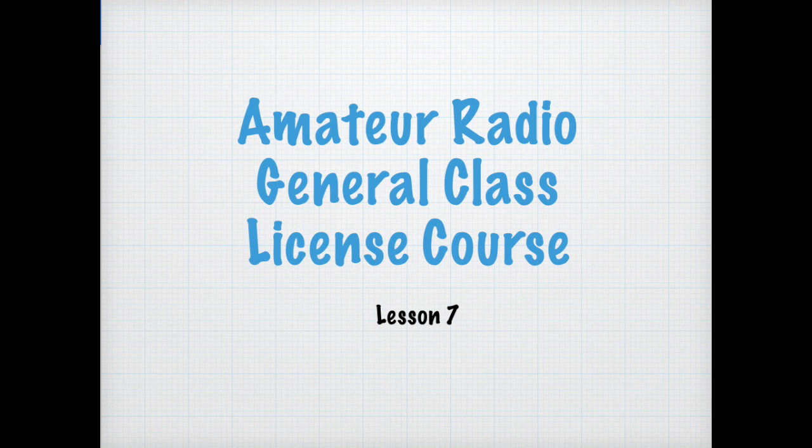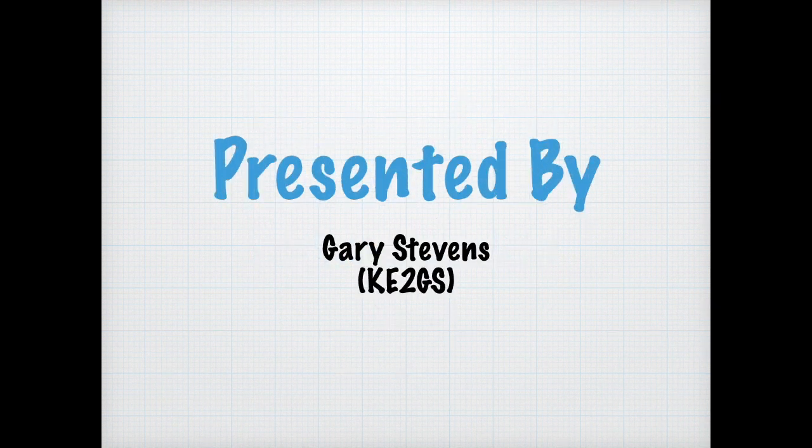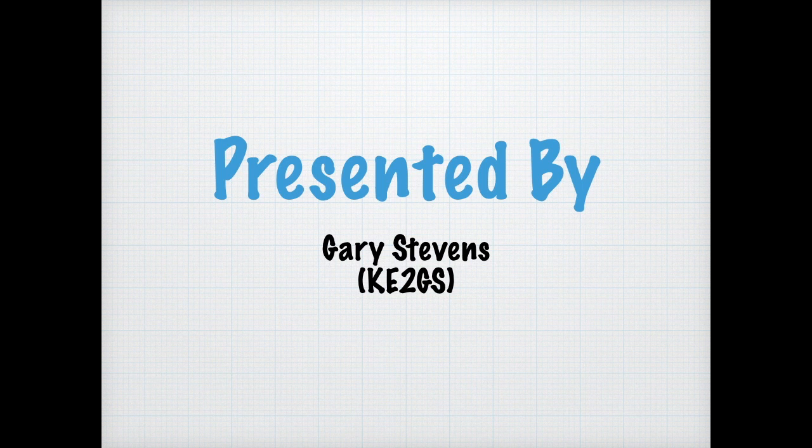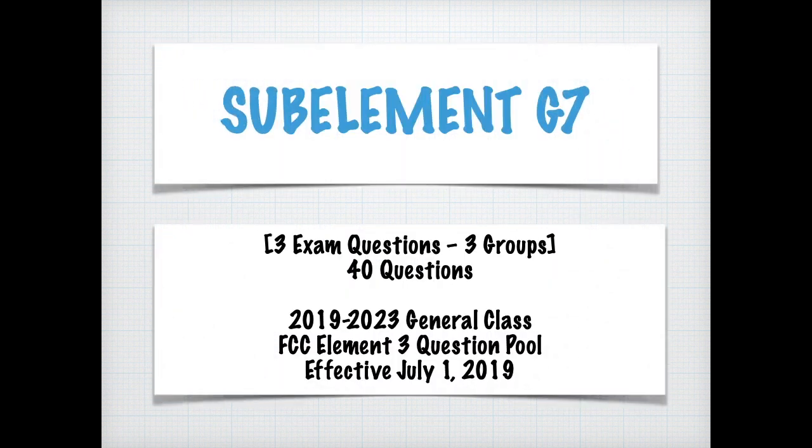This is the amateur radio general class license course lesson number seven. I'm your instructor Gary Stevens, KE2GS, that's Kilo Echo Two Gulf Sierra. This is sub-element G7. There's three exam questions out of the three groups that we're going to be discussing. There's a pool of 40 questions that they're derived from. And this covers the 2019 to 2023 general class FCC element three question pool that was effective July 1st of 2019.